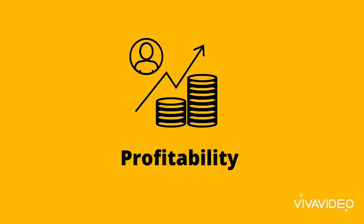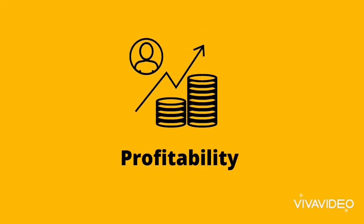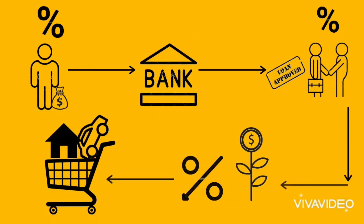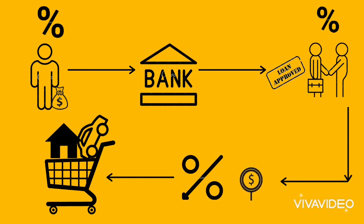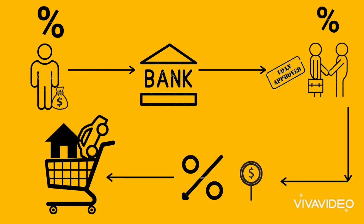In contrast, commercial banks' main objective is to make profit. Commercial banks accept deposits from the general public and loan it out to borrowers. They charge a high rate of interest from borrowers but pay much less rate of interest to their depositors.